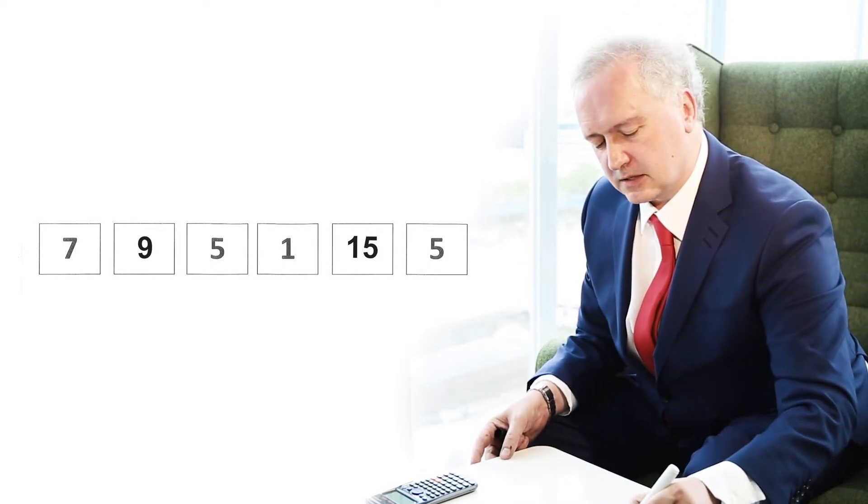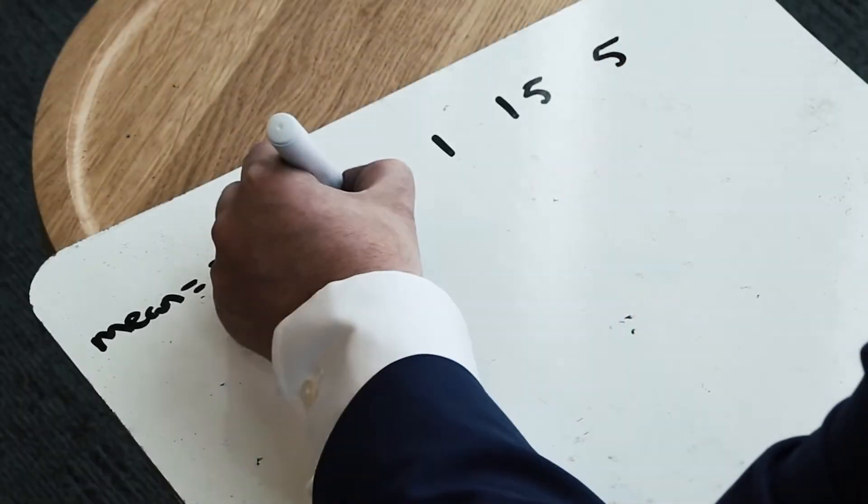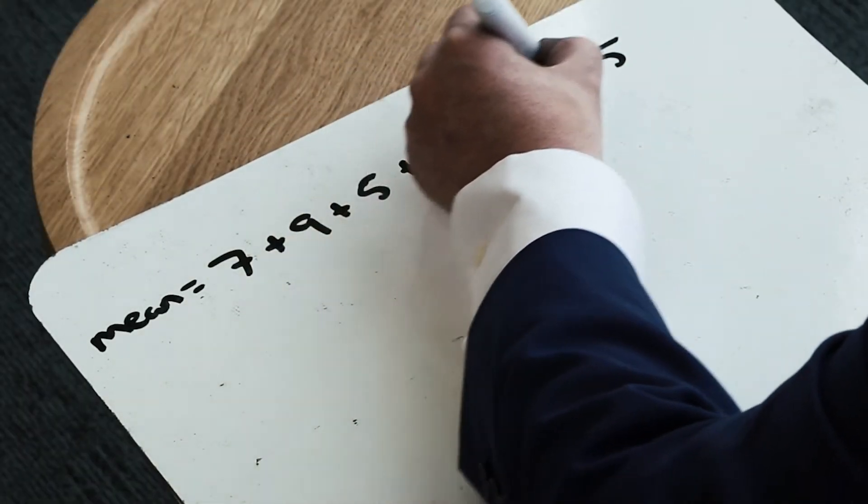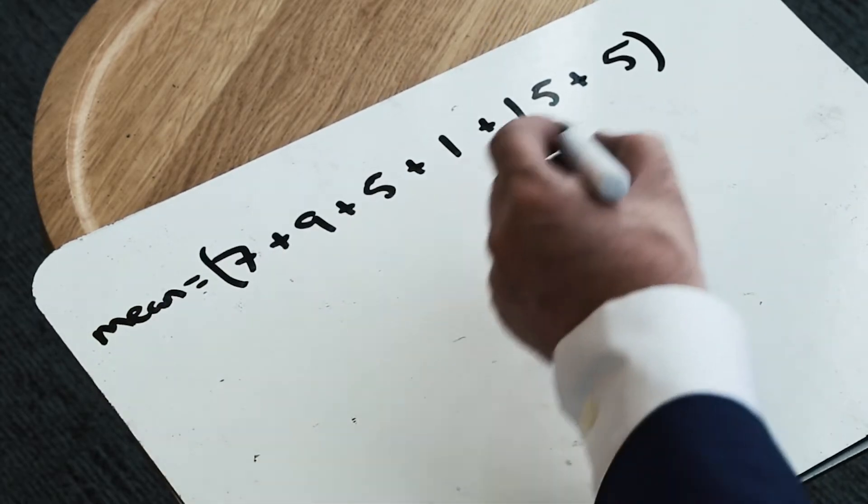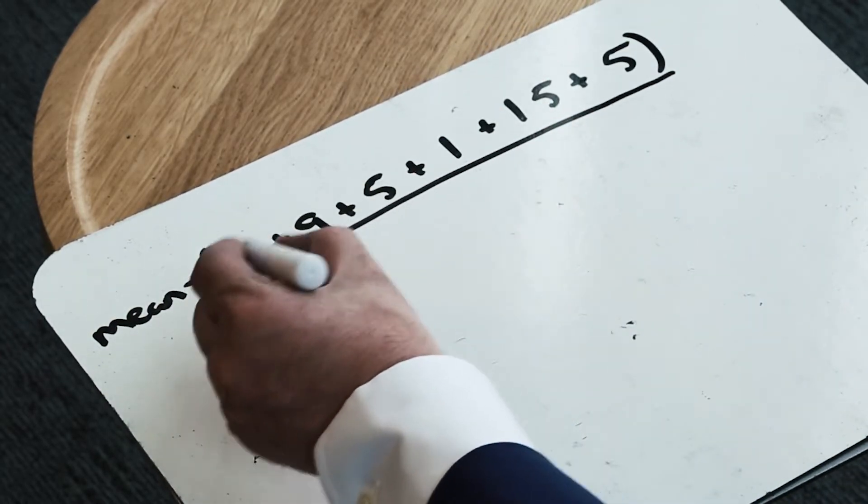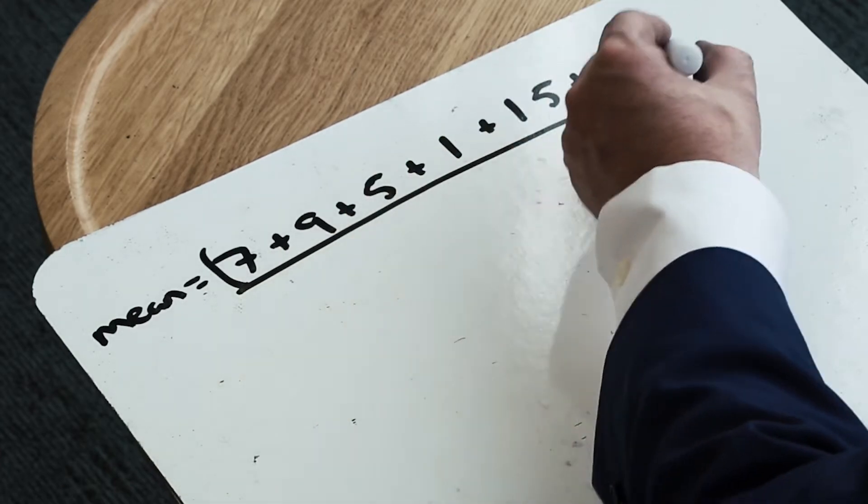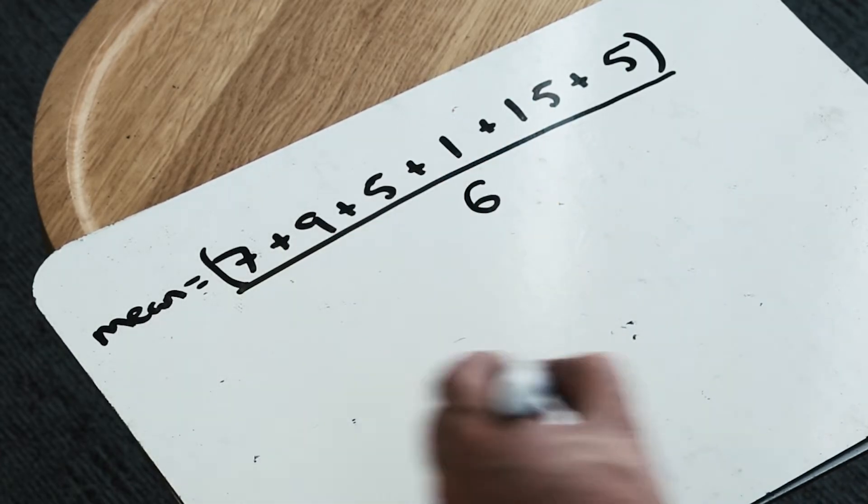So to calculate the mean from this data set, I'm going to add 7 to 9, then add 5, then add 1, then add 15, and then add 5, and divide all of that by the number of numbers. I can see here I've actually got six numbers.